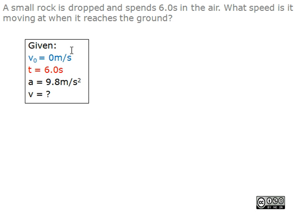Since the rock is dropped, its initial speed must be 0 meters per second. The time is 6.0 seconds. Acceleration is due to gravity, so it equals 9.8 meters per second squared. We need to find the final velocity.